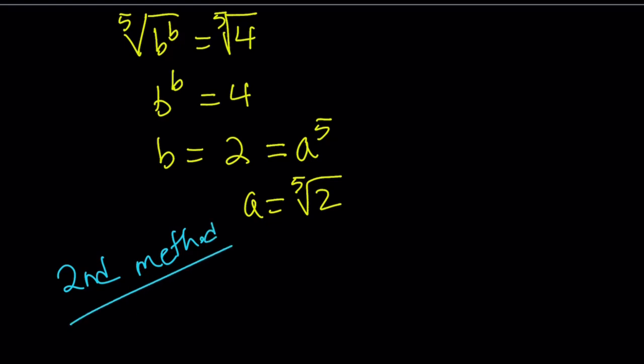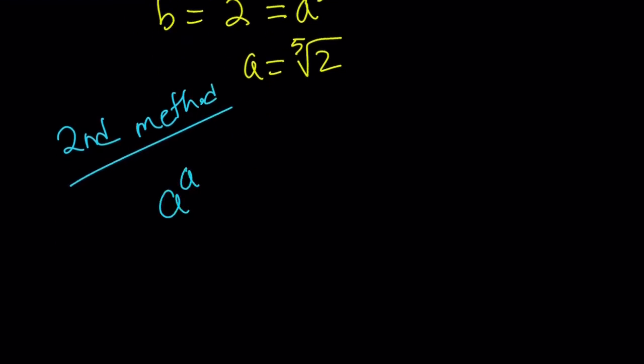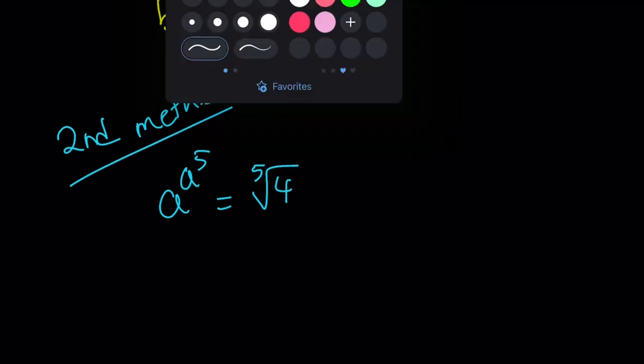For our second method, we're going to do the following. Let me rewrite the problem: a to the power of a to the power of 5 equals the fifth root of 4. We're going to use a trick here. And these methods are, by the way, very similar, but just slightly different.